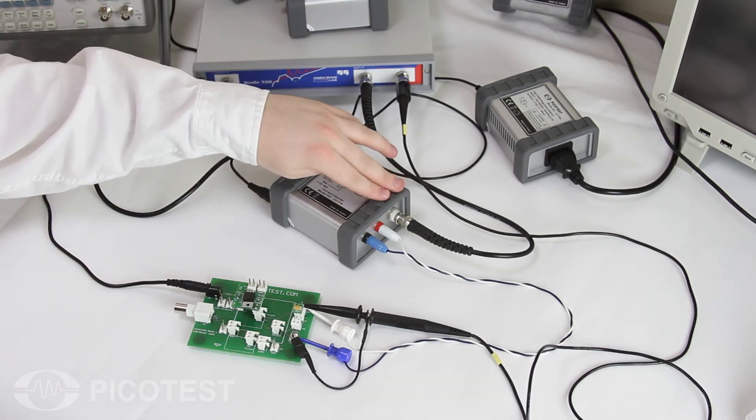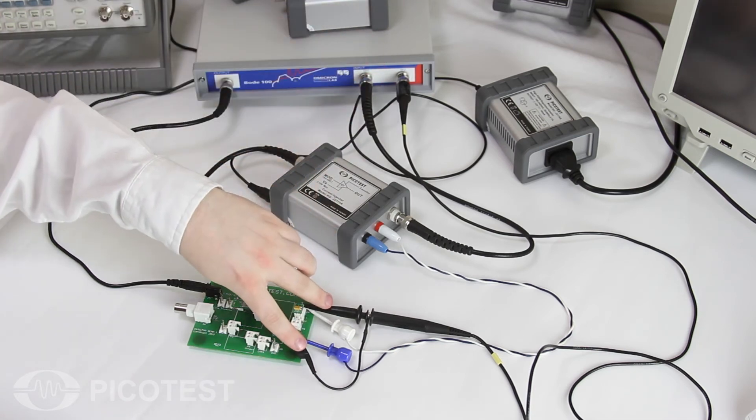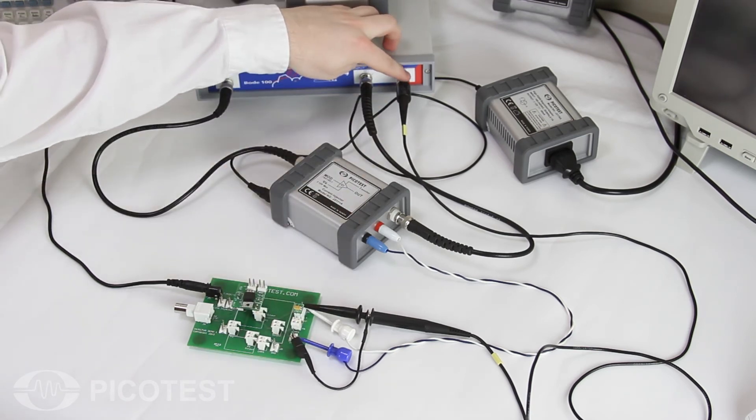The 50 ohm current sensing port is connected to channel 1 of the analyzer, and a 1 to 1 voltage probe is connected from the regulator output to channel 2 of the network analyzer.